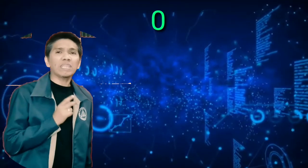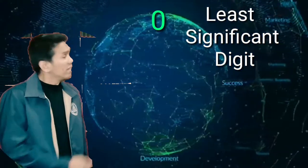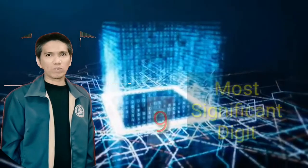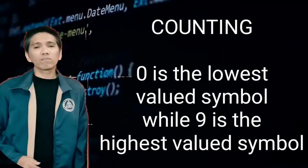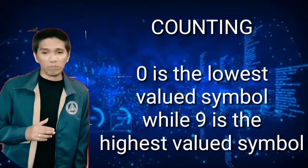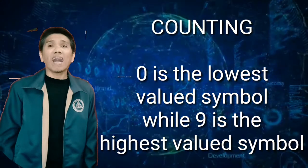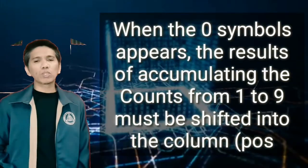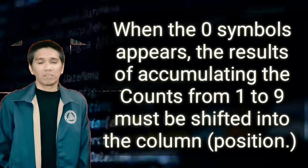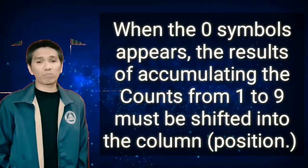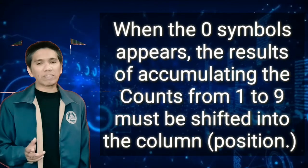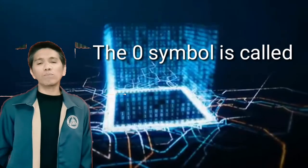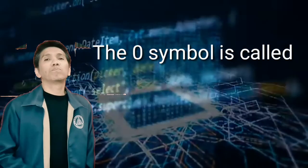Zero is called the least significant digit while 9 is called the most significant digit. In counting, the 0 symbol is the lowest valued symbol while 9 is the highest valued symbol. When the 0 symbol appears, the result of the accumulating count from 1 to 9 must be shifted into the next column or position. The 0 symbol is called the shift marker.